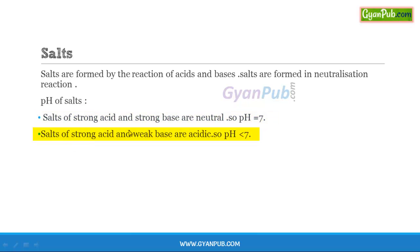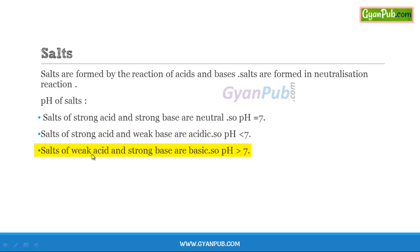Salts of strong acid and weak base are acidic, as the acid is strong and the base is weak, so the formed salt has higher H+ ion concentration. The pH value of salt formed by strong acid and weak base is acidic. Salts formed by weak acid and strong base are basic in nature, as the OH- concentration is more, so the pH is greater than 7.